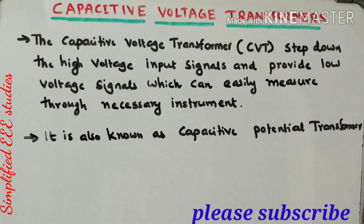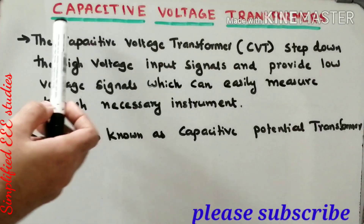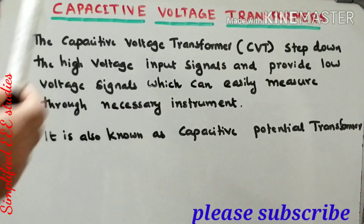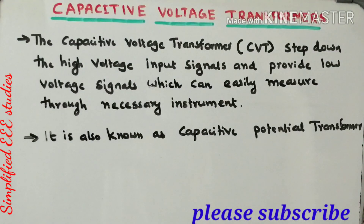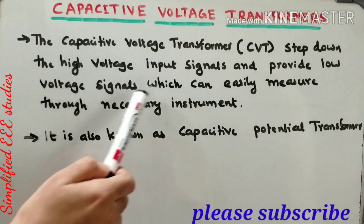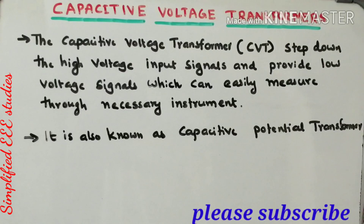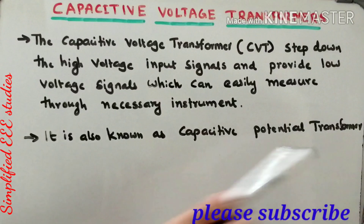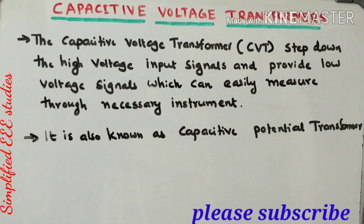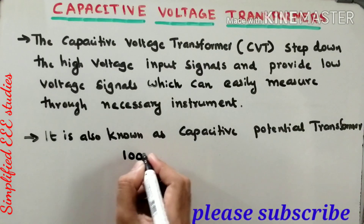Dear all, welcome to the lecture series of high voltage engineering. In this session I will be discussing about capacitive voltage transformer, or CVT. The capacitive voltage transformer steps down high voltage input signals and provides low voltage signals which can easily be measured through necessary instruments such as an electrostatic voltmeter. It is also known as a capacitive potential transformer. The main purpose of a CVT is to measure voltage above 100 kV.